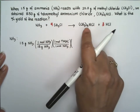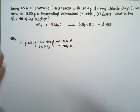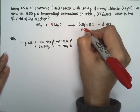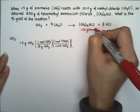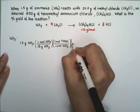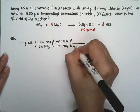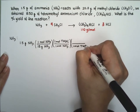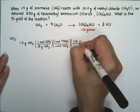The molecular weight of tetramethyl ammonium chloride is 110 grams per mole. Multiplying through, we get the grams of tetramethyl ammonium chloride that ammonia could theoretically produce.